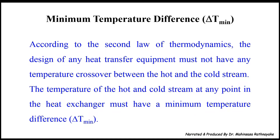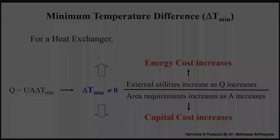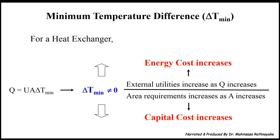According to the second law of thermodynamics, the design of any heat transfer equipment must not have any temperature crossover between the hot and cold stream. The temperature of the hot and cold stream at any point in the heat exchanger must have a minimum temperature difference. This minimum temperature difference is symbolized as delta T minimum. For a heat exchanger, we can use the governing equation Q equals U A delta T minimum. Based on this equation, delta T minimum cannot be equal to zero, because if it equals zero there is no heat transfer. When delta T minimum increases, the heat duty increases, meaning external utilities increase.